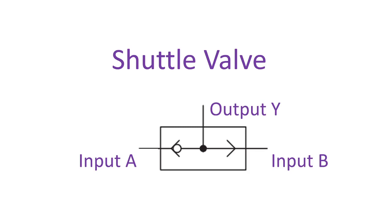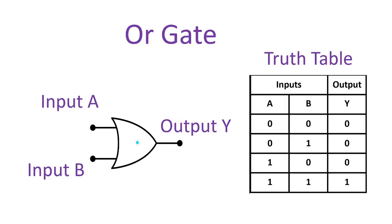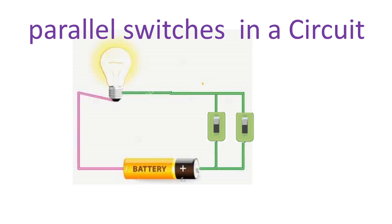And for shuttle valves, they work on the same principle with parallel circuit and OR gate logic gates. The output of the shuttle valve is true if either of the two inputs are true. And for the parallel circuit, the bulb will glow if either of the two push buttons are pressed, or two push buttons pressed together.